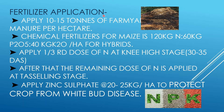For fertilizer application, apply 10 to 15 tons of farm yard manure per hectare, 2 to 3 weeks before transplanting to increase soil fertility and water holding capacity. For hybrid maize, apply 120 kg nitrogen, 60 kg phosphorus, and 40 kg potassium. Apply all phosphorus and potassium plus one-third nitrogen as a basal dose at field preparation. Apply another one-third nitrogen at 30 to 35 days, and the remaining nitrogen at the tasseling stage. Also apply zinc sulfate at 20 to 25 kg per hectare to protect from white bud disease.